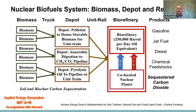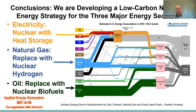This leads to a nuclear biofuel system that includes biomass, the depot, and the refinery. On the left, biomass is shipped by truck to the depots. The first depot option is to pelletize into a dense, storable form and ship by unit train. The second option is anaerobic digestion, yielding a mixture of carbon dioxide and methane shipped via pipeline to the biorefinery. The third option is pyrolysis, creating a pyrolysis oil shipped by pipeline or unit train. At the biorefinery, massive inputs of heat and hydrogen from co-located nuclear power plants produce gasoline, jet fuel, diesel, chemical feedstocks, and optionally sequestered carbon dioxide.